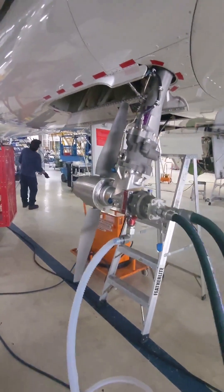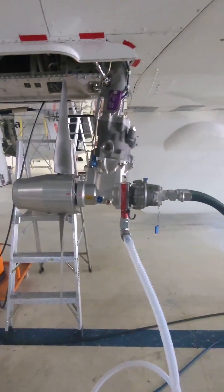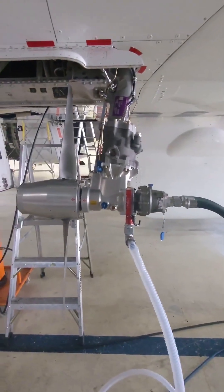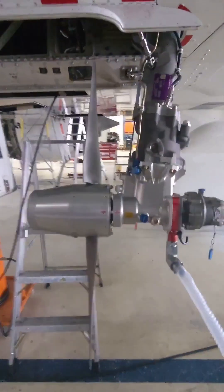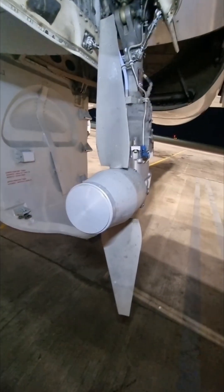Now, that's the basics of the RAT, but the unit itself is quite interesting — it has a lot more features built inside of it. The RAT also has a stall protection device within it. The stall protection device limits the maximum power the pump can take from the turbine. Not only does it produce power, but it also makes sure it protects itself.